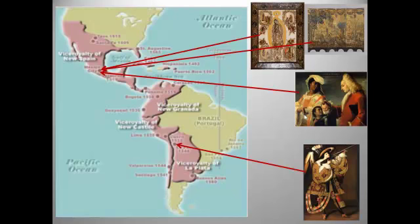Spain divided its conquered territories into viceroyalties. Of the four works we will look at today, three hail from the viceroyalty of New Spain, headquartered in Mexico City and heavily influenced by contacts with the Aztecs and the peoples they conquered. But we'll begin with the work from what began as the viceroyalty of Peru and was then split into three viceroyalties.